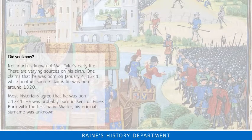Did you know? Not much is actually known of Wat Tyler's early life. There are varying sources even on his birth — one claims he was born in 1341, while others claim around 1320. However, most historians agree it was in fact 1341. There is also uncertainty around his surname, because his original surname is not known. It is thought that the surname Tyler comes from his occupation, which was as a roof tiler.